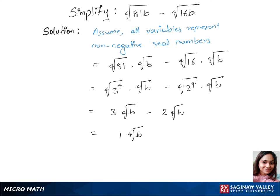We subtract this and get one fourth root of b. That's just fourth root of b. That's our final answer.